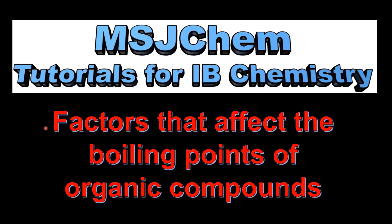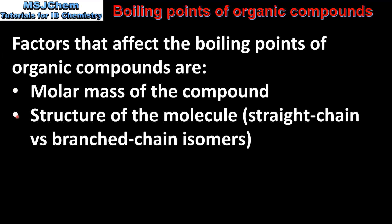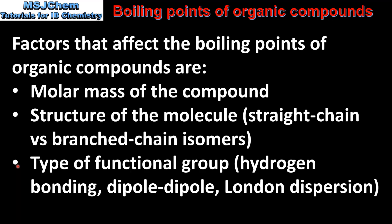This is MSJChem. In this video I'll be looking at the factors that affect the boiling points of organic compounds. The three main factors are: molar mass of the compound, the structure of the molecule — which is straight chain vs branched chain isomers — and the type of functional group, which determines the intermolecular forces. These are hydrogen bonding, dipole-dipole forces, and London dispersion forces.